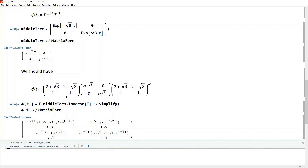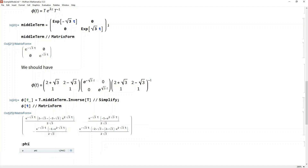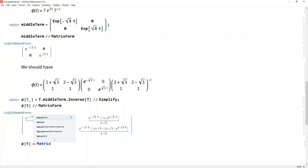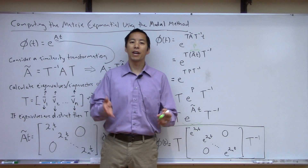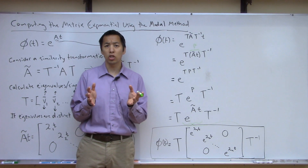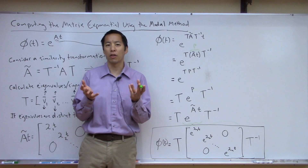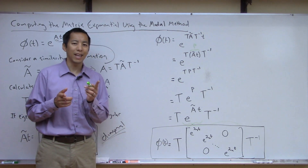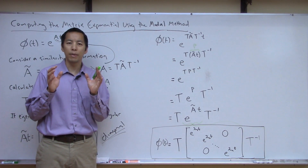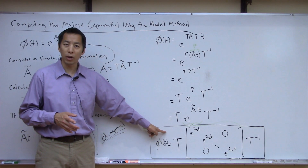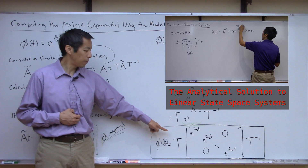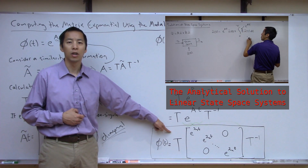Let's make sure this agrees with Mathematica's MatrixExp function of the original A·t — and with simplify applied, voila, it works out. So this is the matrix exponential calculated using the modal or diagonalization technique, valid for cases where the eigenvalues of your A matrix are distinct. We alluded to earlier that this method gives insight into the behavior of linear systems, stability, and eigenvalues — we'll cover that link in a future video.